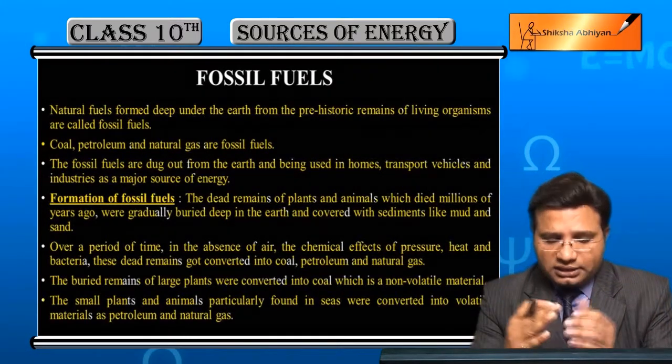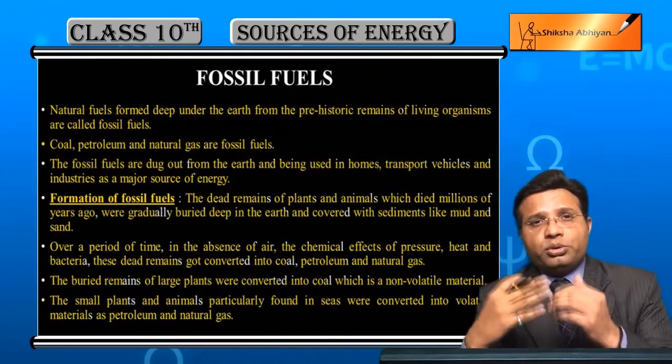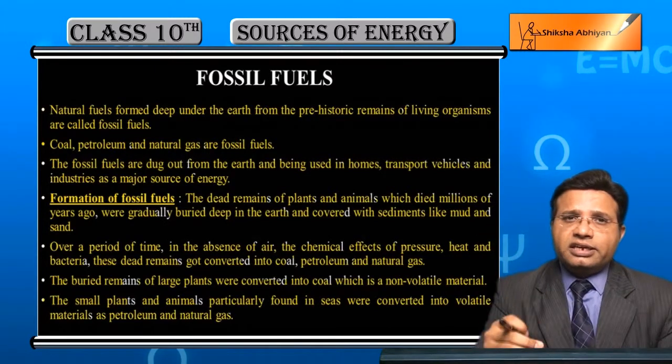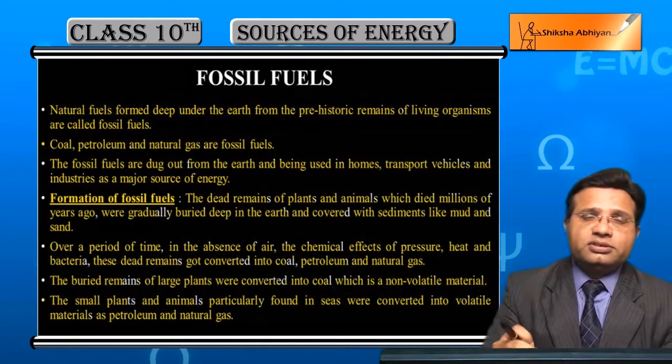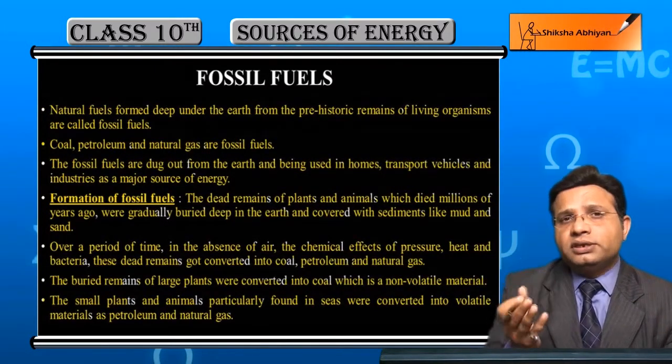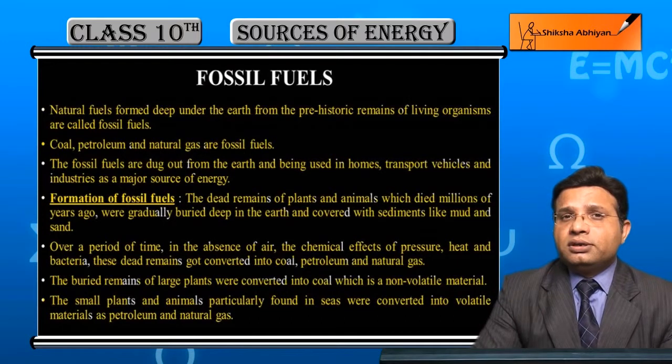From the remains of plants and animals, petroleum and natural gas are extracted by drilling — pipes are inserted and through them petroleum and gas are drawn out.